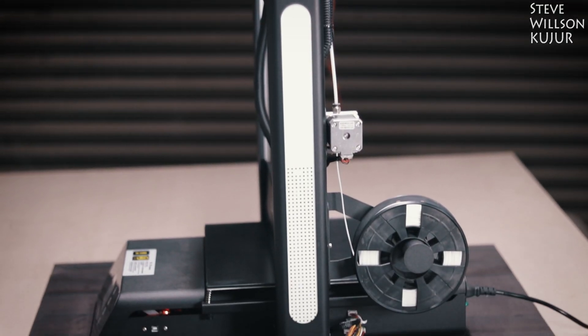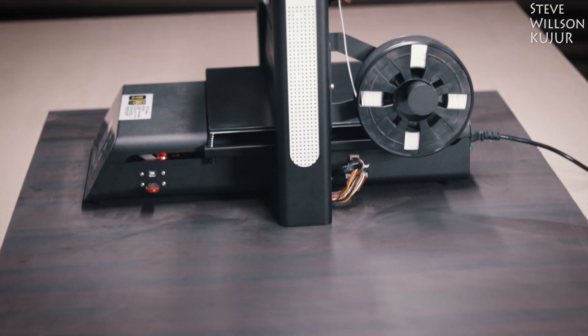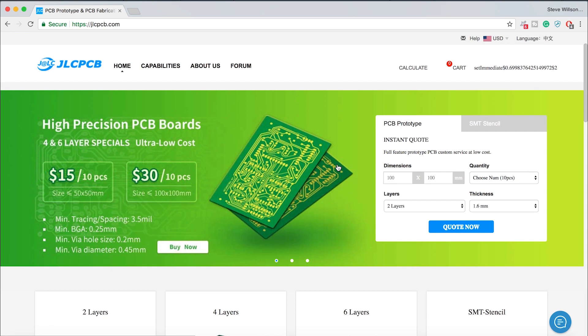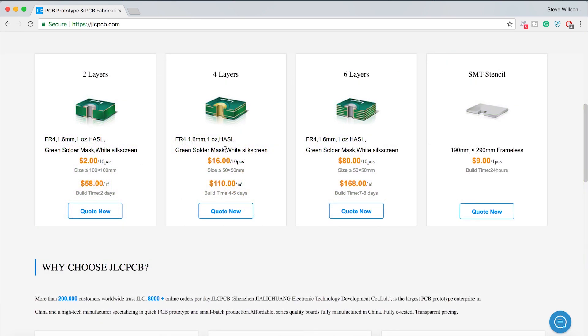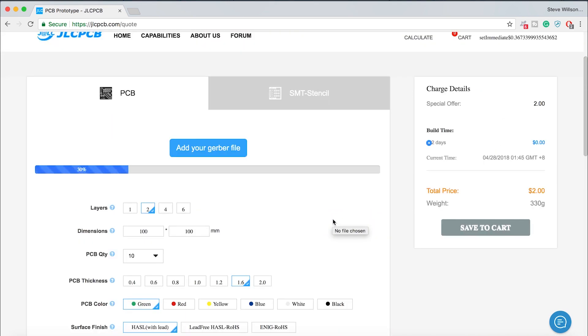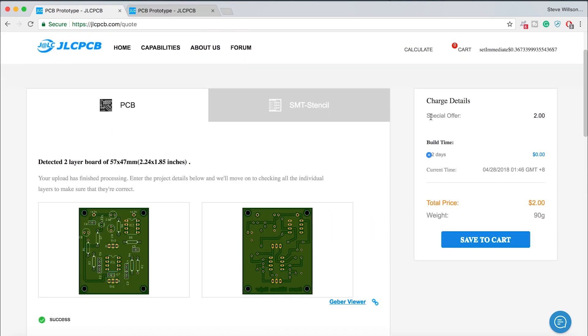And before we start, a quick shoutout to a sponsor of this video. JLCPCB are the world's largest PCB manufacturer. They offer 2 layer, 4 layer, 6 layer and SMT stencil. Upload your Gerber file today and get 10 PCBs just for $2. Processing time is 48 hours.